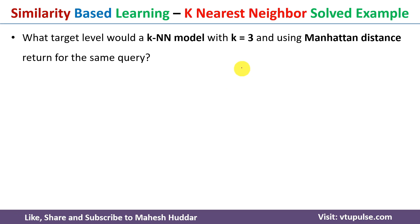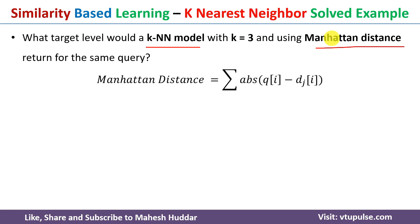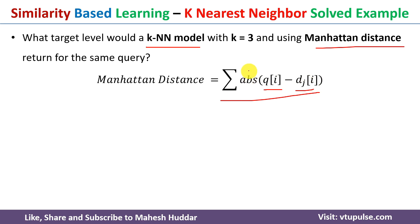First we will discuss how the KNN model is used with Manhattan distance. The question is: how do we calculate the Manhattan distance? To calculate the Manhattan distance we use this formula — the summation of the absolute value of (qi minus dj_i), where qi is the query example and dj is the current given example.